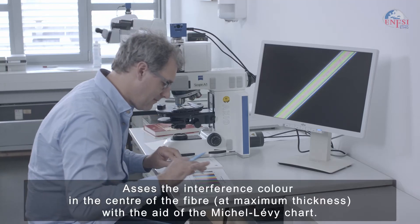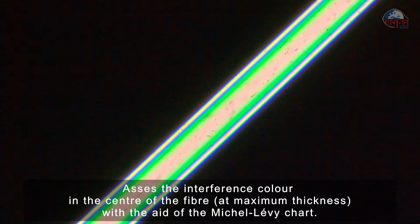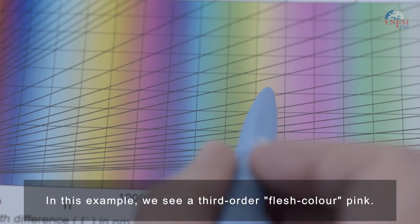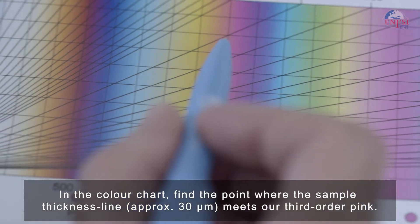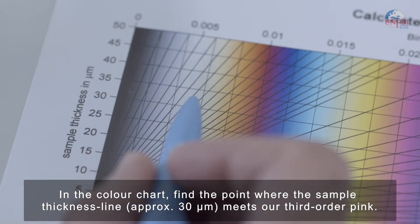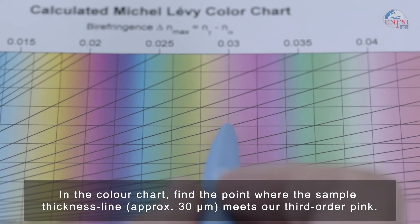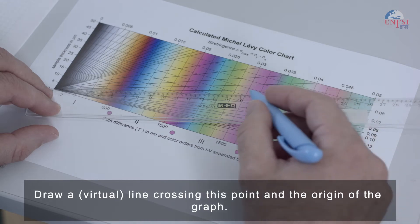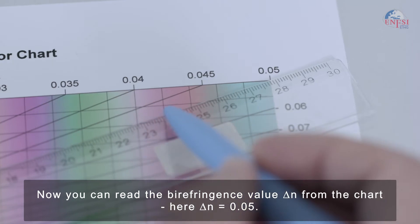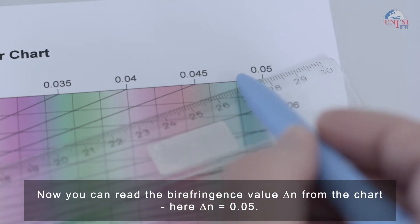Assess the interference color in the center of the fiber at its maximum thickness with the aid of the Michel-Levy chart. In this example, we see a third-order flash color pink. In the color chart, find the point where the sample thickness line, approximately 30 micrometers, meets our third-order pink. Draw a virtual line crossing this point and the origin of the graph. Now you can read the birefringence value delta N from the chart. Here, delta N is 0.05.